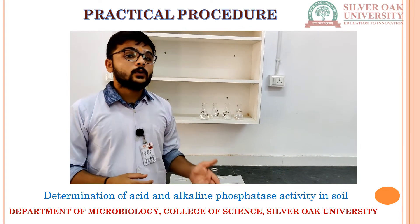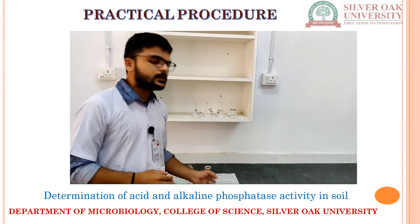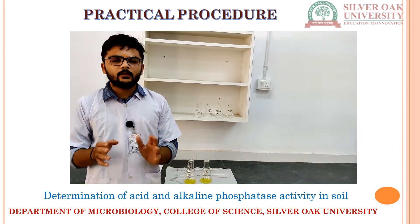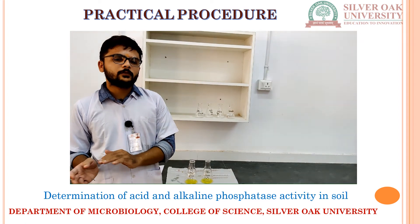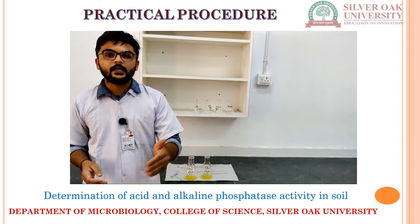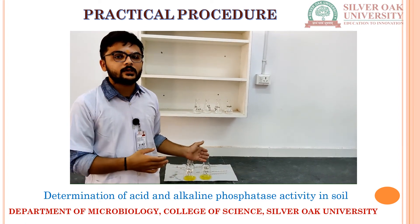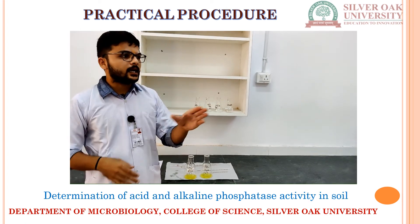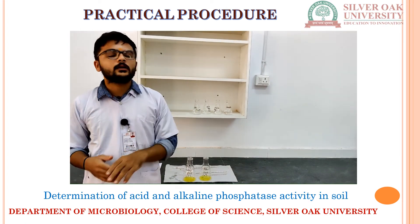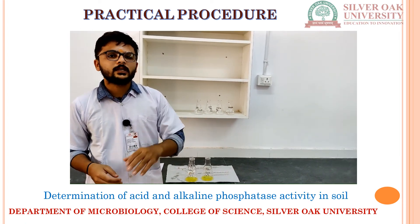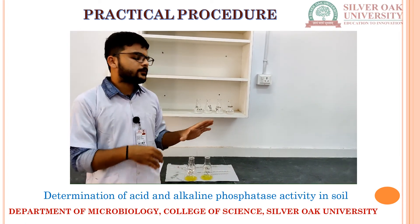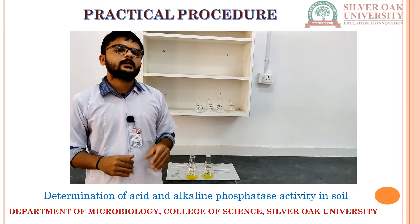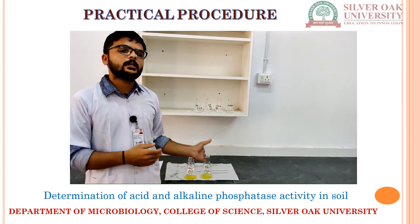Now all we have to do is analyze this in spectrophotometry at a wavelength of 420 nanometers, and we will be able to figure out the phosphatase activity through that. After obtaining the OD for every solution, in order to determine your phosphatase activity in your sample, you have to compare it with the standard graph of p-nitrophenol, and from that you can determine the phosphatase activity available in your sample.